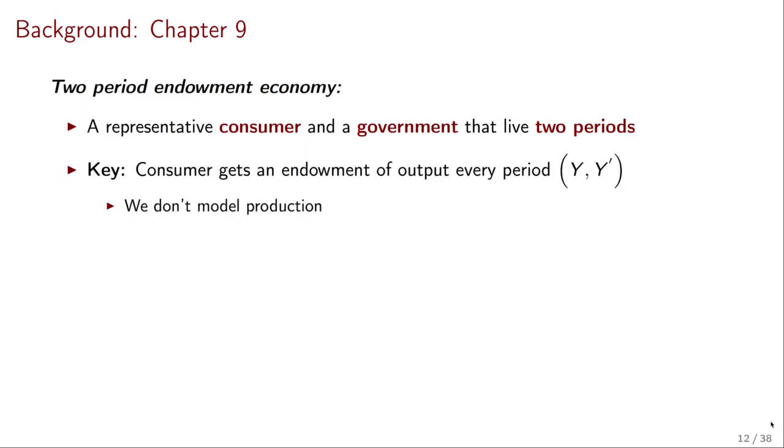The key in this model is that consumers get an endowment of output every period. This is going to be called Y and Y prime. Y for current period, Y prime for the future period. The key here is we're not modeling where production is coming from. That we're going to do in a future model. This is going to allow us to focus on the way they are consuming and saving.